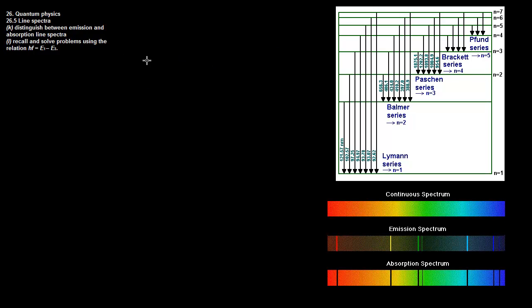So on to the last topic of this series, which is 26.5 line spectra. Basically this is back to the idea that the electrons, if we remember before in the last video we were briefly talking, we have an atom and we have an electron and the electron will absorb energy from photons of light.